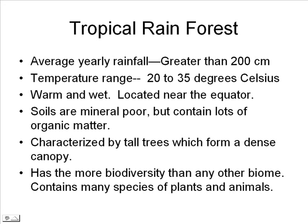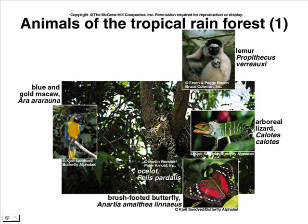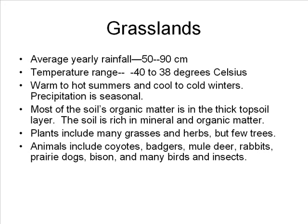Tropical rainforests are usually located near the equator. The soils are fairly mineral-poor but contain lots of organic matter. They are characterized by tall trees that form a dense canopy covering the ground. The tropical rainforest has the most biodiversity of any biome, containing many species of plants and animals.